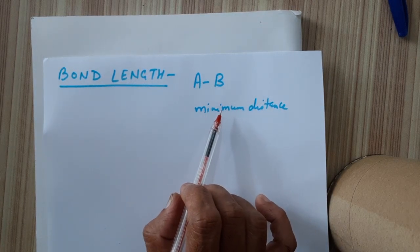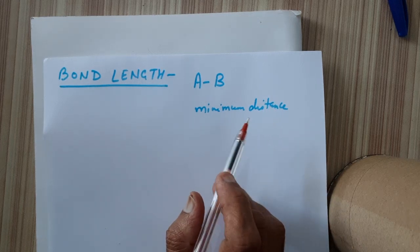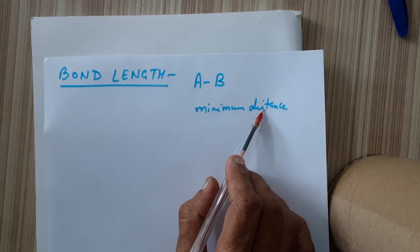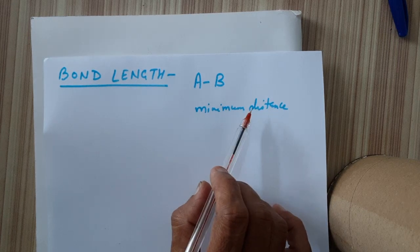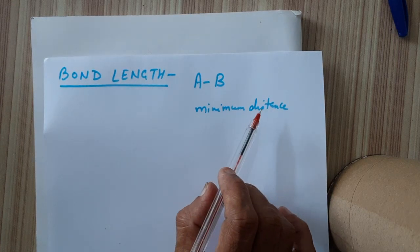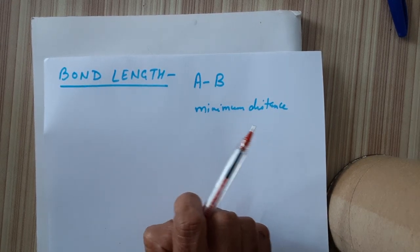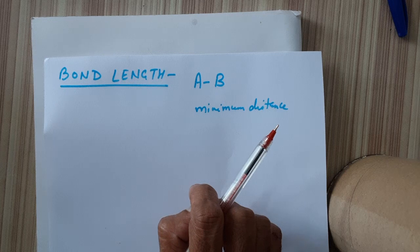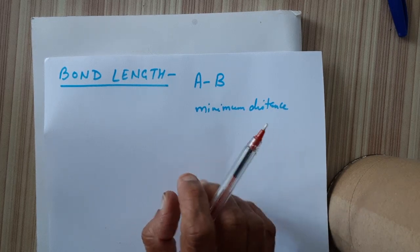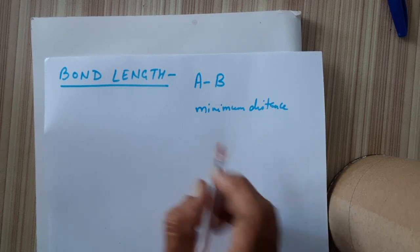Since atoms are continuously vibrating, this distance will not remain constant — it will vary. So bond length is the average of the minimum or optimum distance at which the potential energy becomes minimum and the attractive and repulsive forces have just balanced each other.